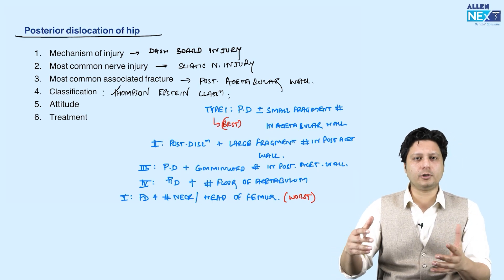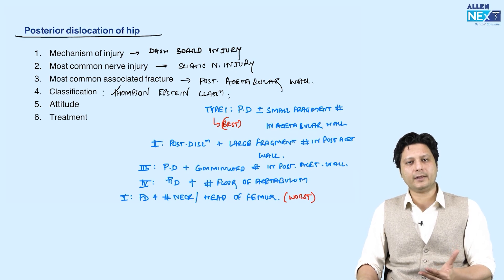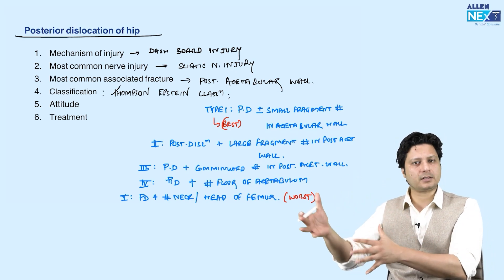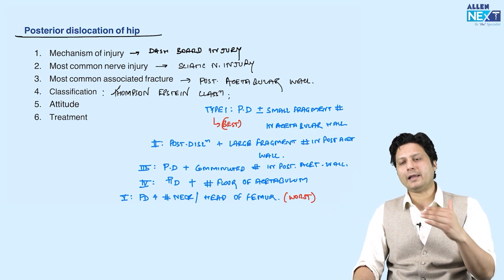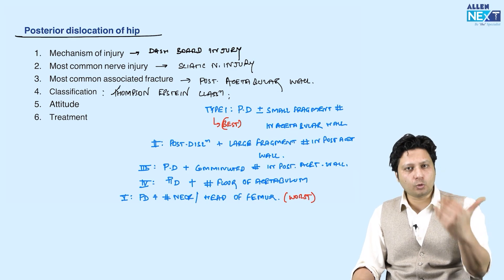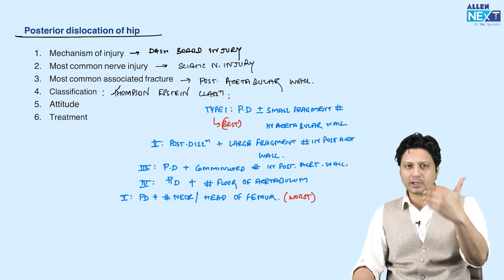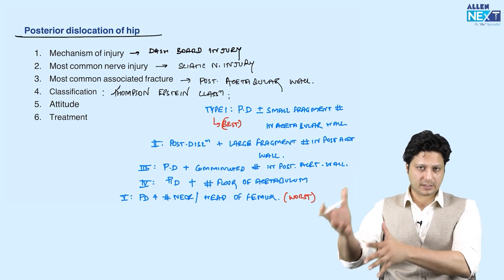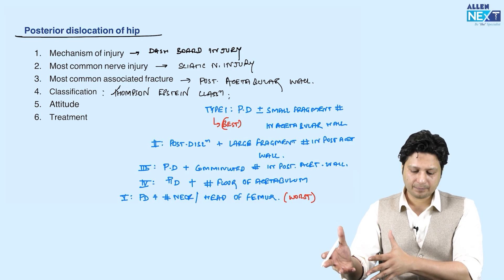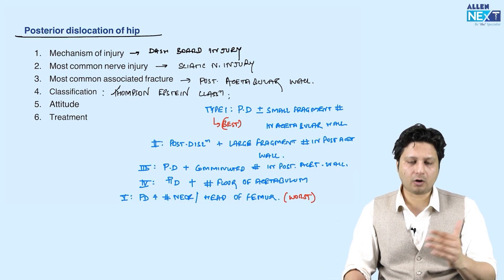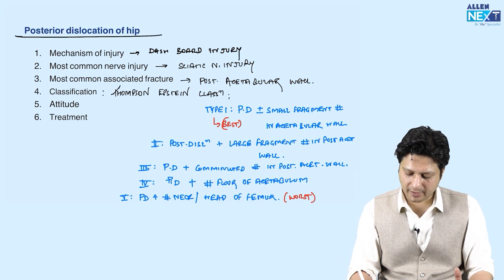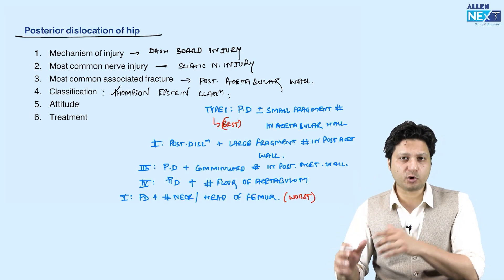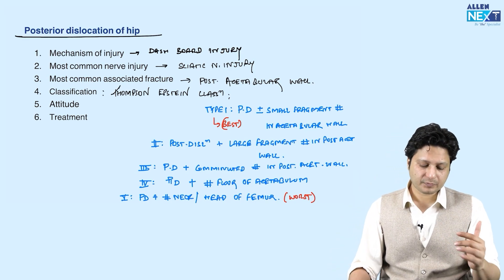In type 1, all you have to do is reduce it by closed reduction methods. In types 2, 3, 4, and 5, you have to go for surgical fixation. This is how Thomson-Epstein has classified the posterior dislocation of the hip joint into five different categories.